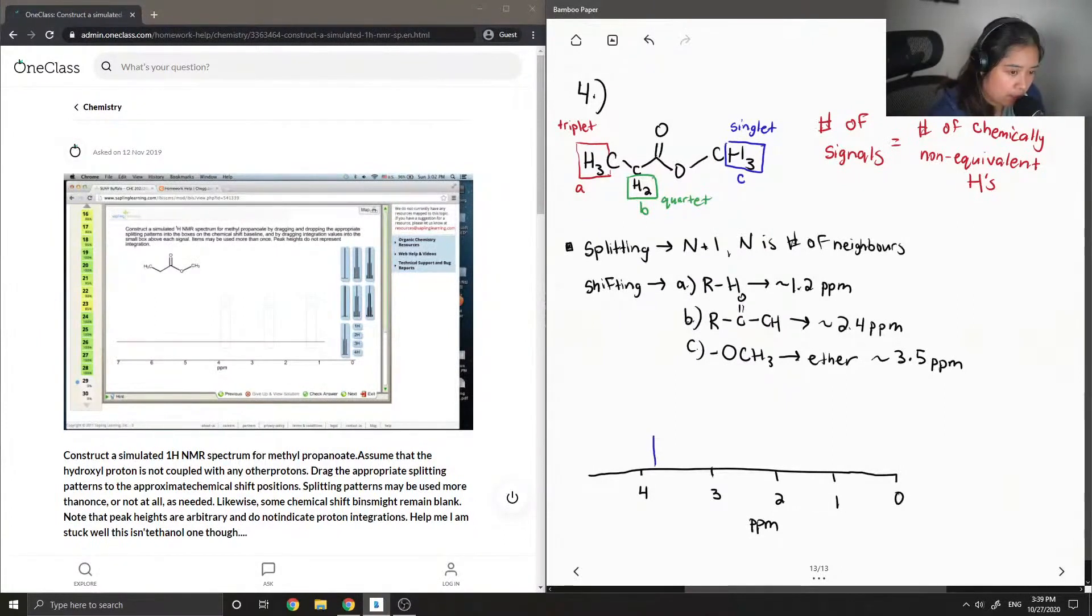So the one that splits as a singlet, I'll draw here. Oh wait, I said 3.5-ish. That was not a straight line. And its integration value will be 3H. So that's just how many hydrogens are with that peak.